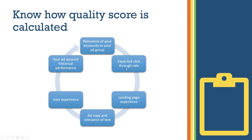We can actually focus on only three of them, and those three are expected click-through rate, landing page experience, and your ad account historical performance. Factors such as user experience are mostly related to landing page, and your ad copy and keywords are again related to ad relevance. So those are the factors that Google takes into consideration when calculating your quality score.